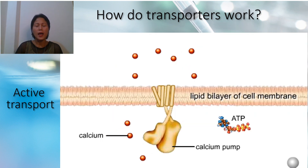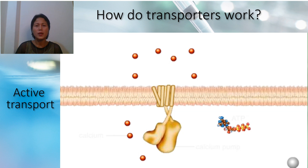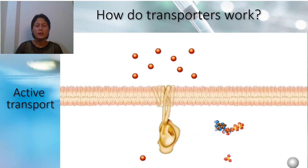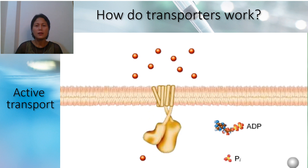Here is an example of active transport. Active transport of calcium begins when ATP binds to a calcium pump, a type of transporter in the cell membrane. Calcium enters a tunnel through the transporter and binds to a functional group inside. Binding causes the transporter to accept a phosphate group from ATP. ADP is released, which changes the shape, and calcium is released. The protein returns to its original shape. In living cells, the calcium pump helps keep the calcium concentration at least 1,000 times lower inside than outside.